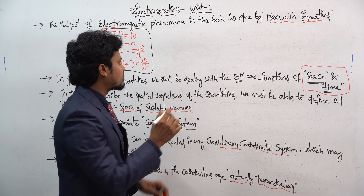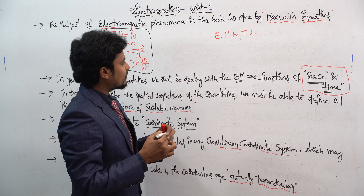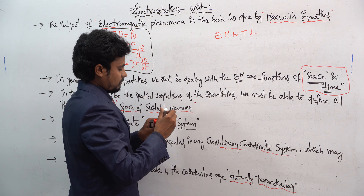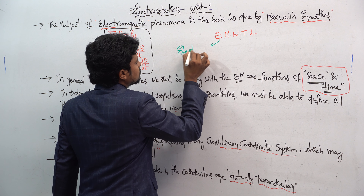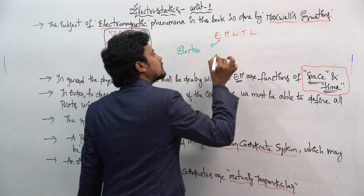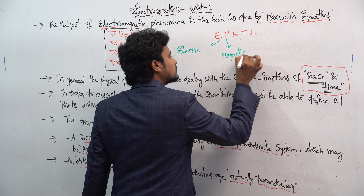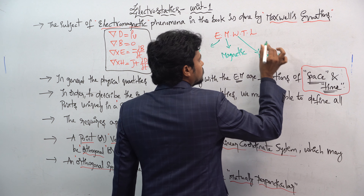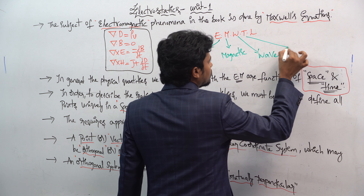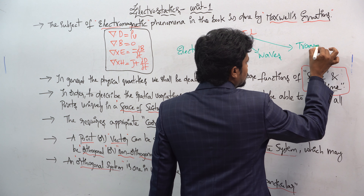Our subject is E.M.W.T.L. Here E represents electrostatics, M represents magnetics, W represents waves, and T.L represents transmission lines.